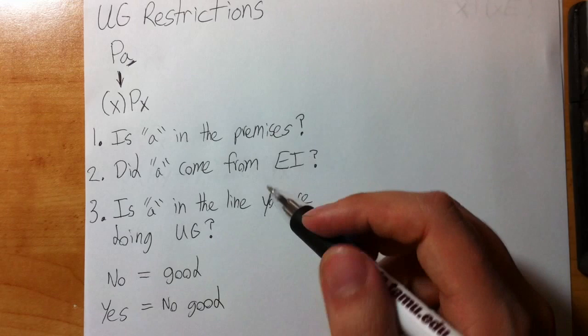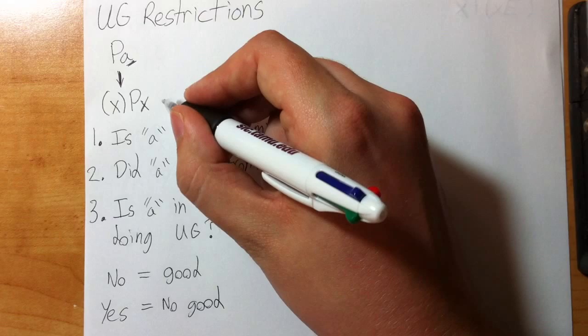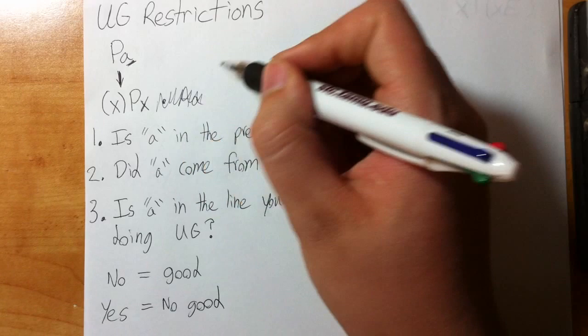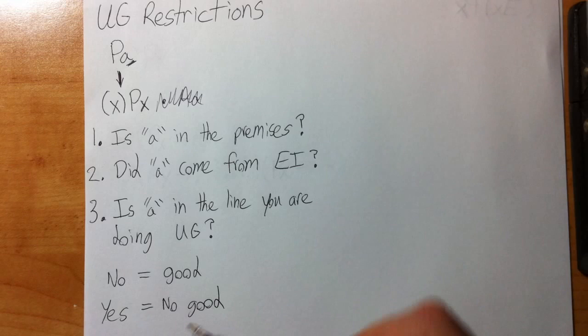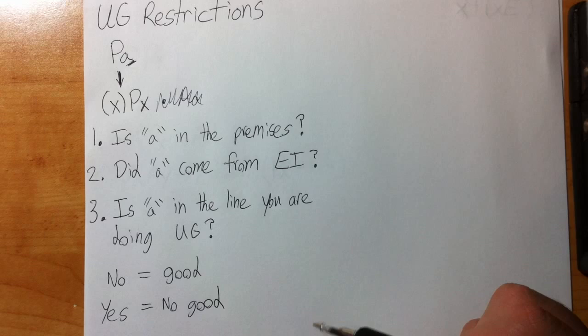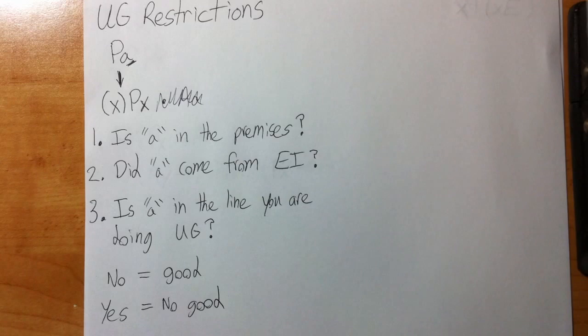And then finally, is a in the line that you're actually using UG on? So is a, or whatever letter you're using, is it in this line also? For example, if it looked like that—if that was the case, this would violate the third restriction. So if you can answer no to all these questions, then you're good. If you have to answer yes to one of these questions, you are no good. So it's really important that you think about what you're doing. And remember, UG is just like EG, you just have to pass these three steps.